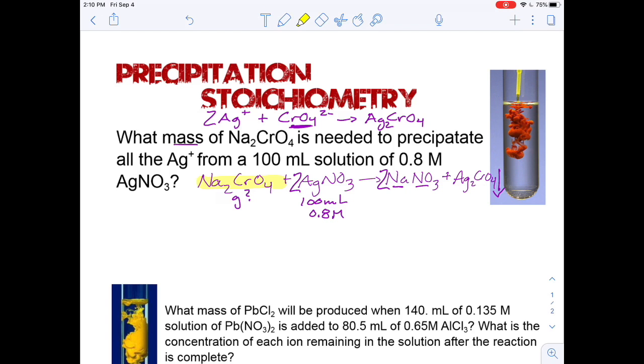So what it's asking is: how much of my sodium chromate do I need to cause all of this silver to become my solid? It's basically stoichiometry. I'm asking what is the perfect amount of my sodium chromate that I need to consume all of the silver ions that are present.